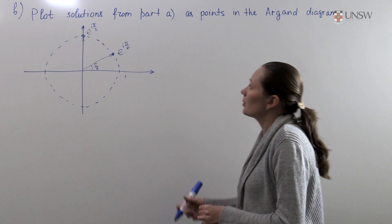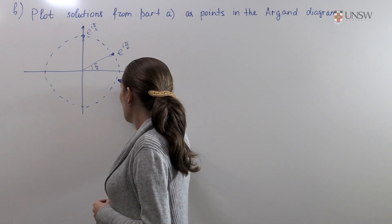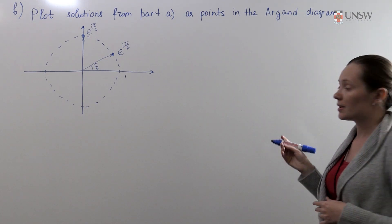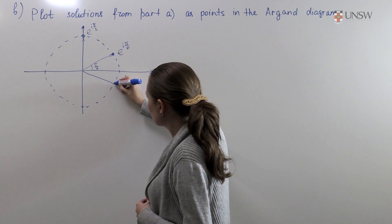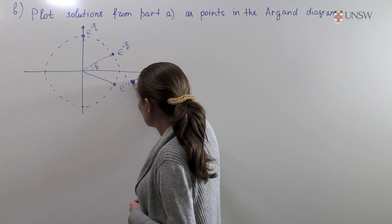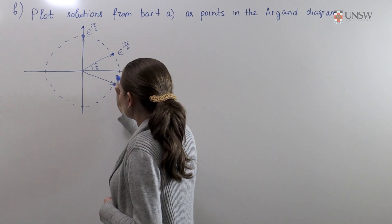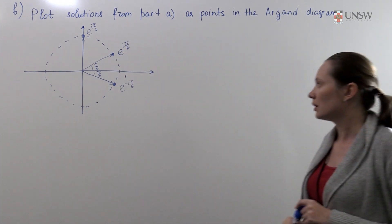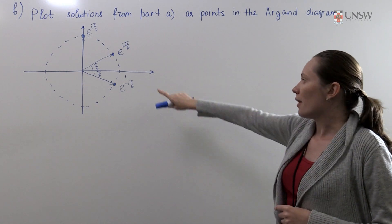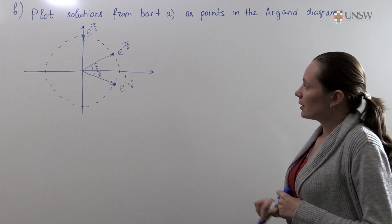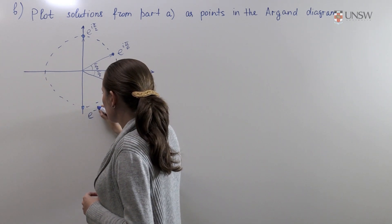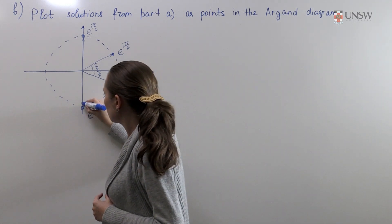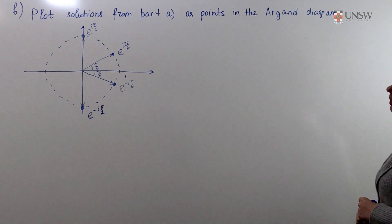Next one is e to the power minus iπ/6. It will be angle π/6 but in the clockwise direction, so it should be somewhere here. This point is symmetric to the first point with respect to the x-axis, and these two points are complex conjugates. Similarly the point e to the minus iπ/2 is the conjugate of the point e to the iπ/2, and it will be here.